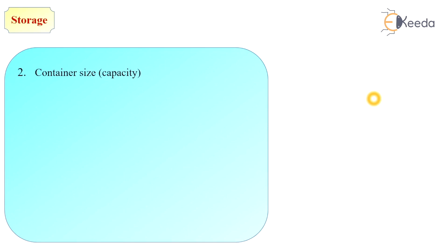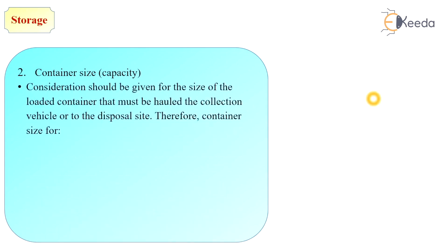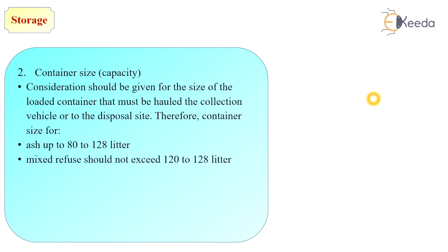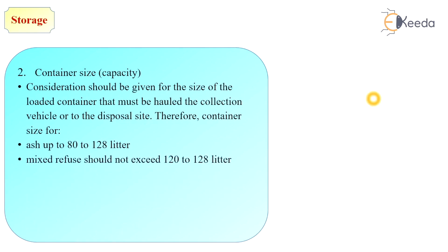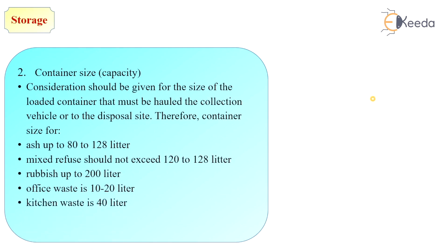The second factor is the size or capacity of the container. Consideration should be given to the size of the loaded container that must be hauled to the collection vehicle or to the disposal site. Container sizes are: ash — up to 80 to 128 litres; mixed refuse — should not exceed 120 to 128 litres; rubbish — up to 200 litres; office waste — 10 to 20 litres; kitchen waste — up to 40 litres; and garbage — 48 to 80 litres.